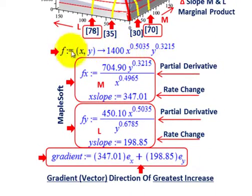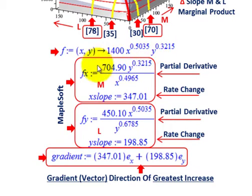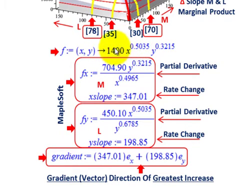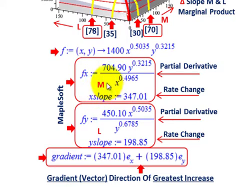We need to take partial derivatives. This is our production function. X represents my material, Y my labor input. You just hold one of them constant. If we do our partial in terms of our material — f of x — you just take your y value raised to its exponent, leave that constant in your derivative. Then take your x exponent — your material exponent — times the coefficient 1400. That gives you 704. Then you subtract 1 from that exponent, so it brings your x down: 0.5035 minus 1 gives you negative 0.4965. That's for our partial derivative f of x — that's the slope of my material.